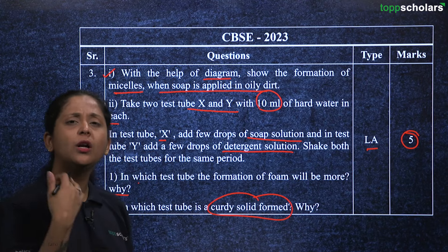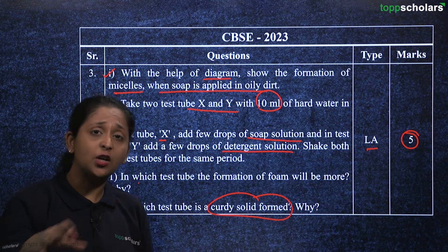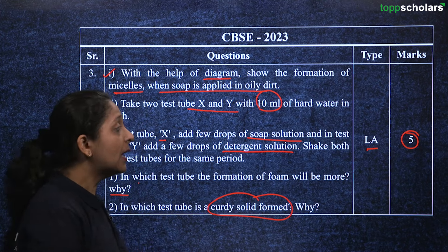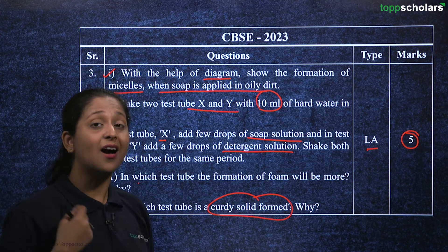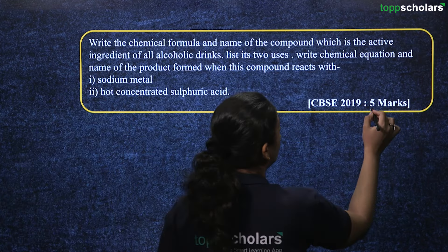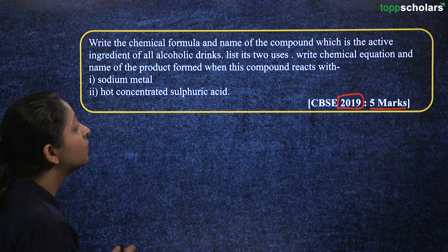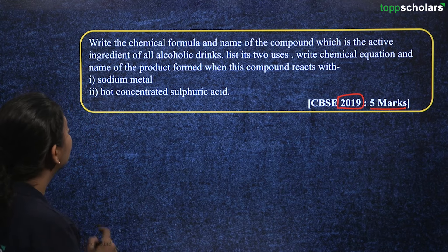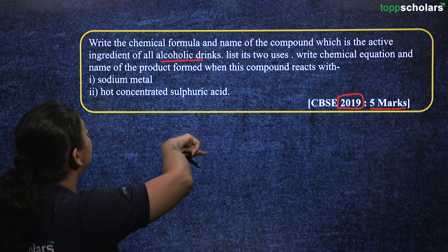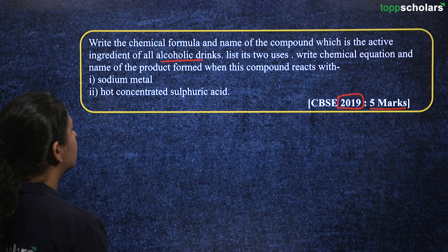From these questions, we can see a wide range and variety from this topic. There is not much of a clear pattern, but we can try to answer a few. Let us start by answering the long question from the 2019 paper — about the chemical formula and name of the compound which is the active ingredient in alcoholic drinks, its uses, and chemical equations when reacting with sodium and sulfuric acid.